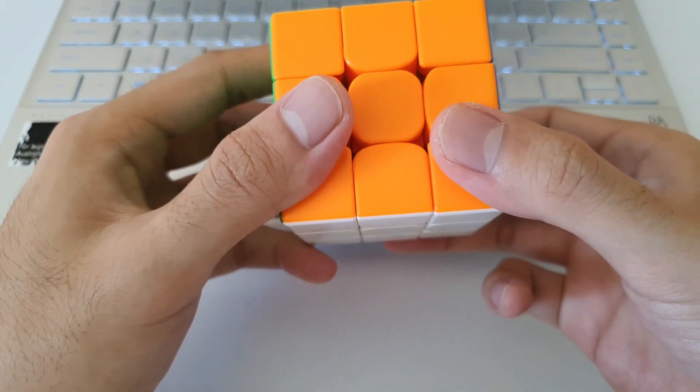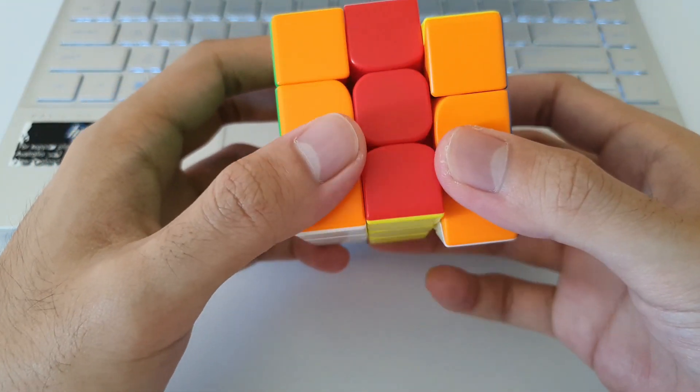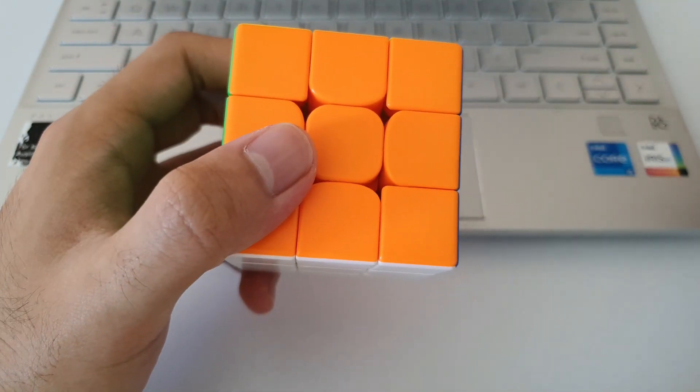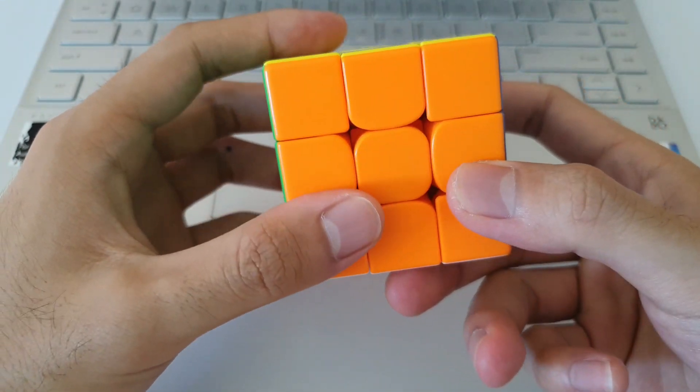And at first you'll find that you might miss your middle layer so you might hit both layers or you might get stuck in the middle layer or something. I mentioned this in my U perm tutorial. A lot of practice with the M2s will definitely help you out.